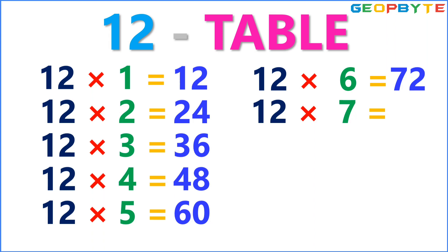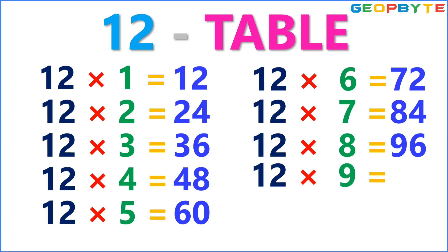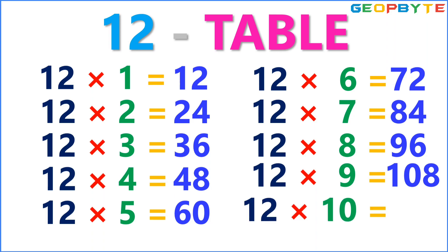12 sevens are 84. 12 eights are 96. 12 nines are 108. 12 tens are 120.